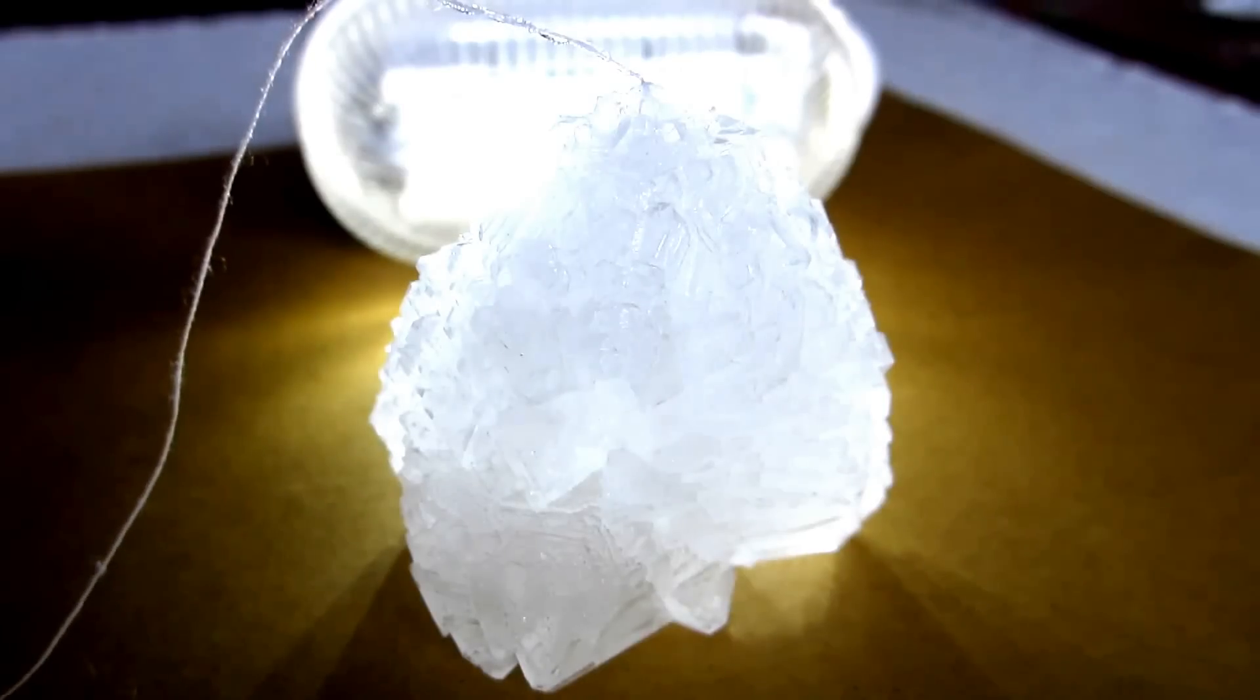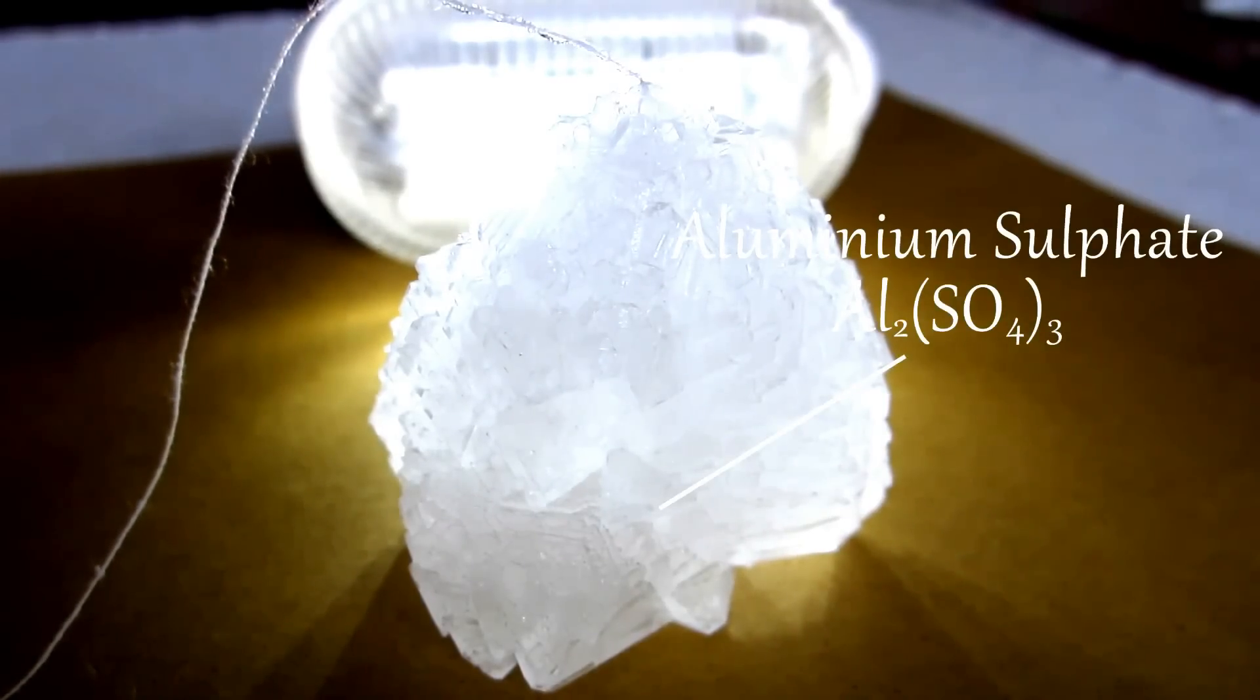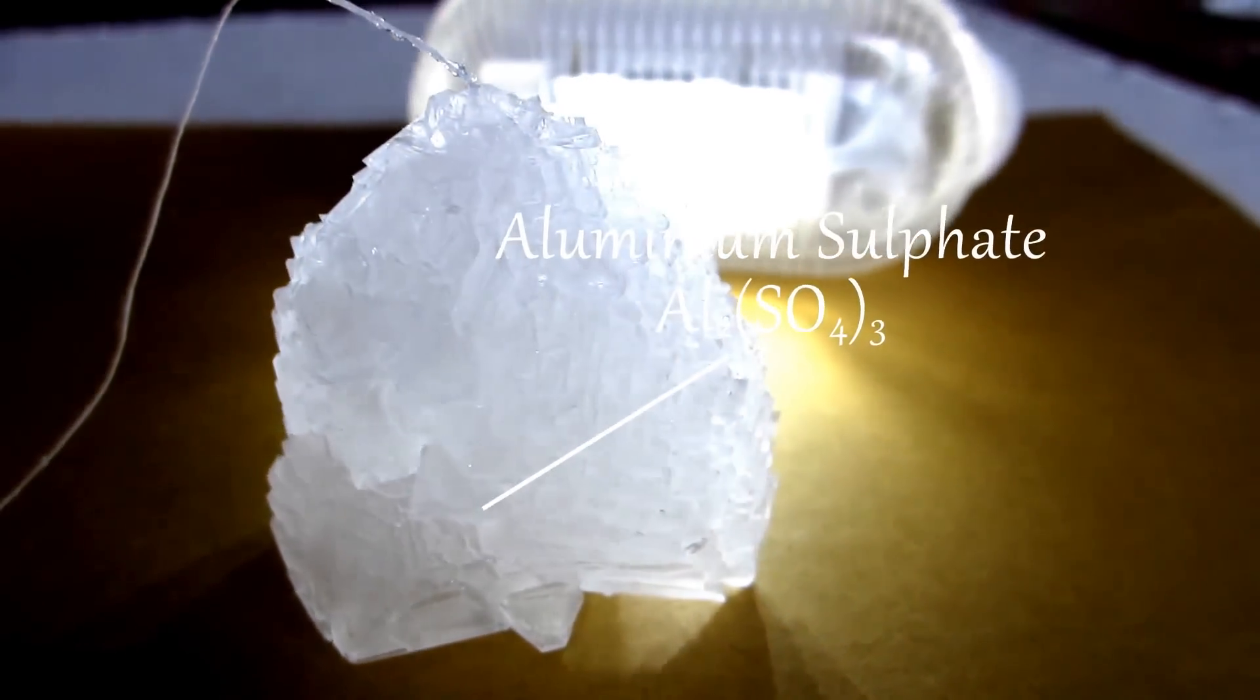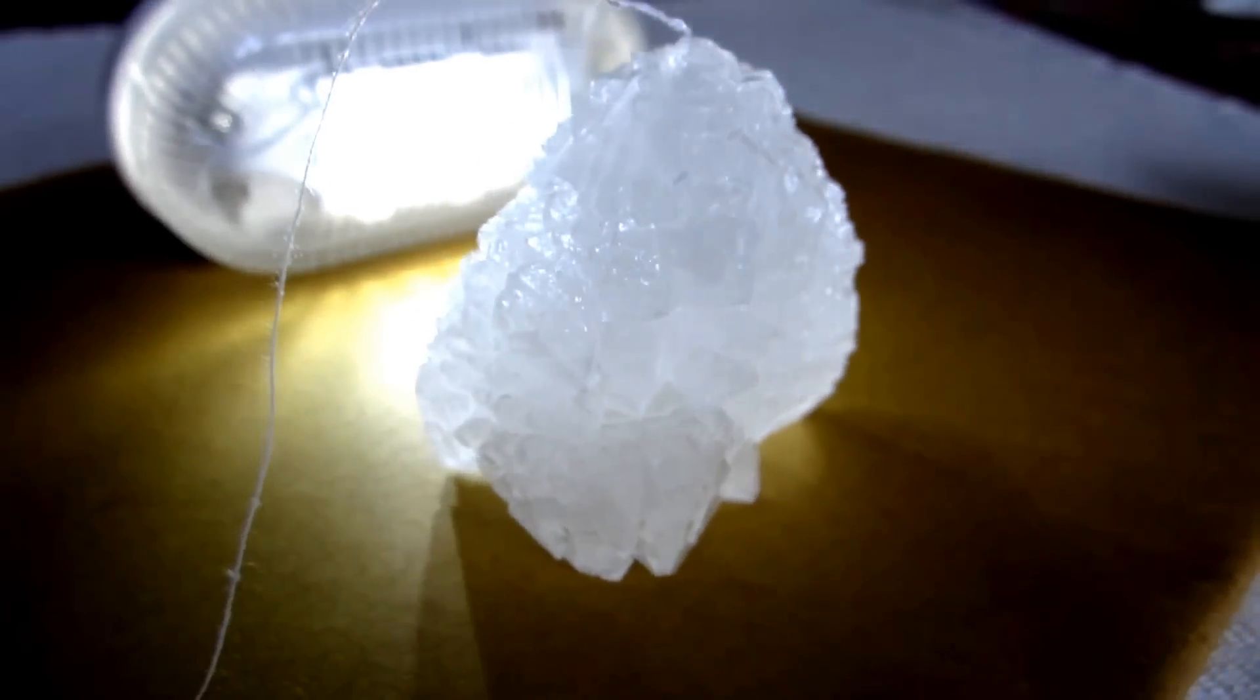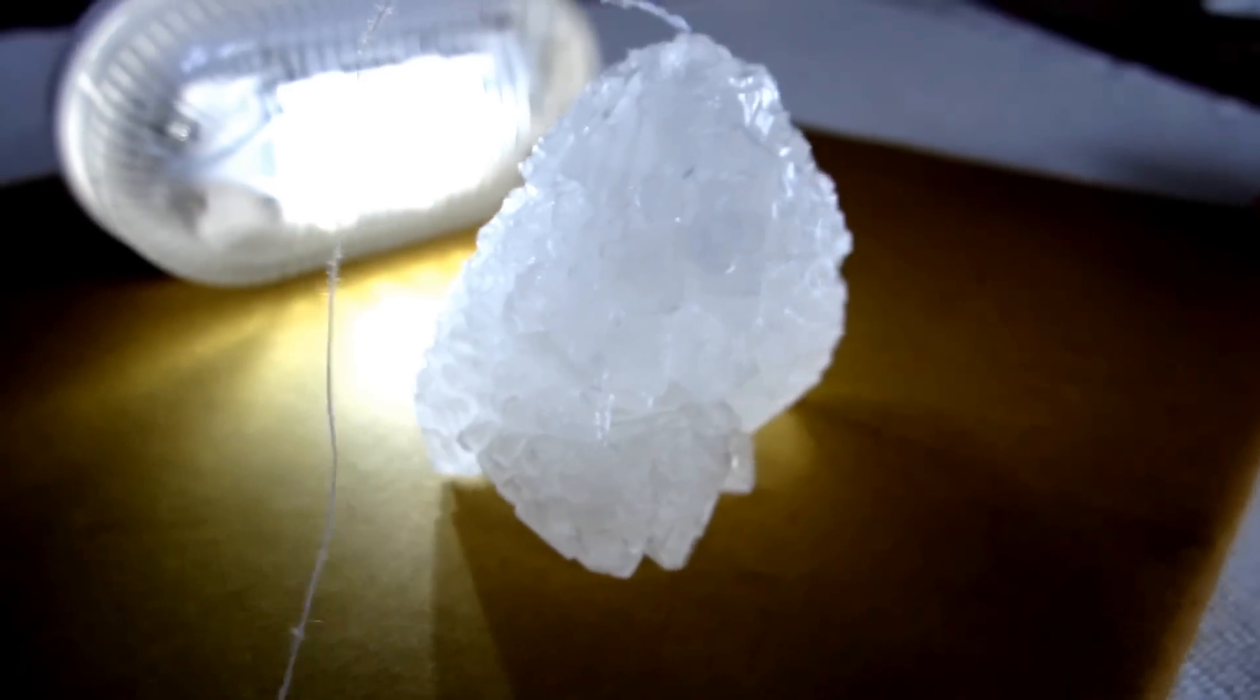There we have it, alum crystal which is aluminum sulfate. It is used in water purification which causes impurities to coagulate which are removed as the particulate settles to the bottom of the container or more easily filtered.